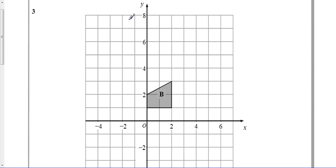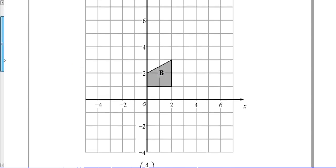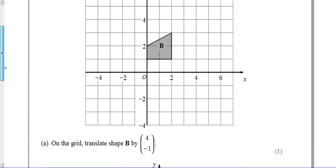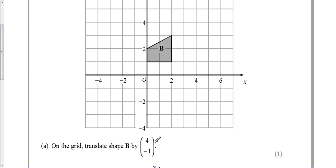Okay, so we've got question number three here with a coordinate axis and shape B. It asks us to translate the shape by the vector (4, 1). We know the 4 is the horizontal component and the -1 is the vertical component. It's similar to coordinates, although this is what's known as a vector.